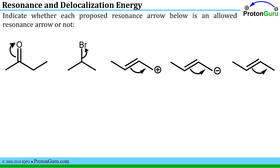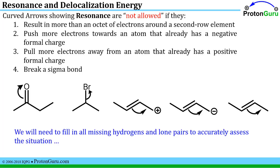One of the important skills to develop in learning how to do resonance properly is displayed by this problem: indicate whether each proposed resonance arrow is allowed or not when you're trying to draw resonance contributors. Well, there are a few things that you are not allowed to do when you're trying to do resonance structures. A curved arrow showing resonance cannot result in more than an octet of electrons around any of the second row elements like carbon or nitrogen.